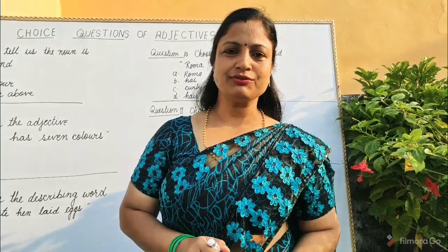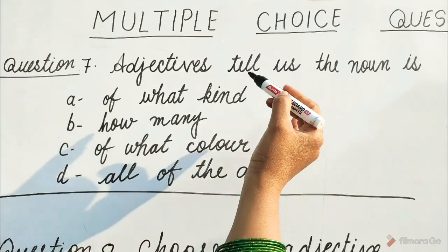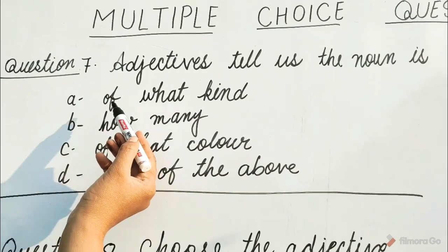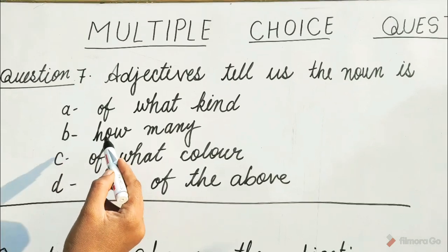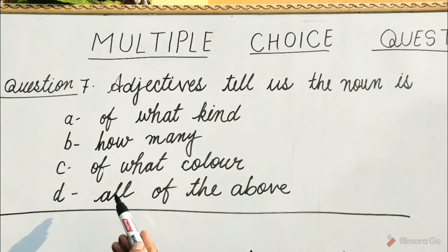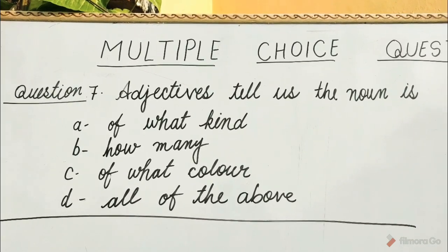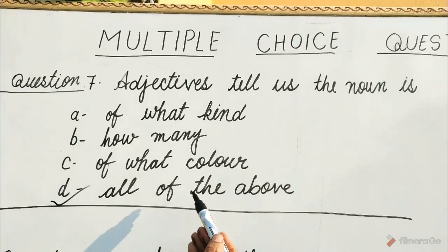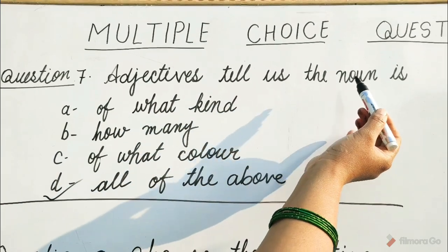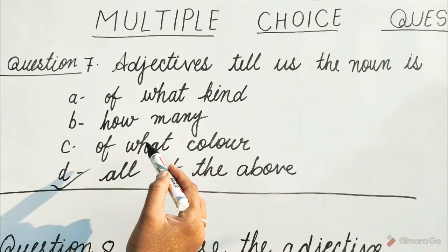Let's see questions from 7 to 12. Question 7: Adjectives tell us the noun is. Options are A. Of what kind? B. How many? C. Of what color? D. All of the above. Guess children, which option will be correct? Yes, it is D option — All of the above. Because adjectives tell us the noun is of what kind, how many, and of what color.